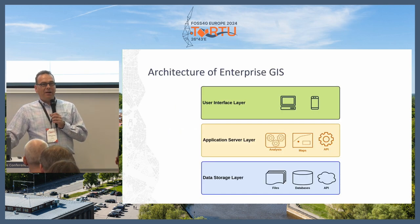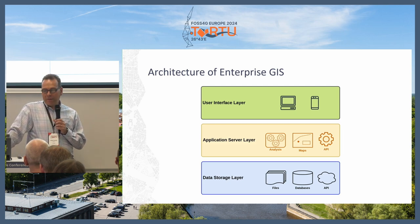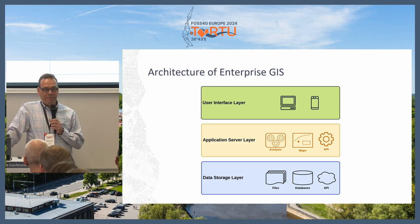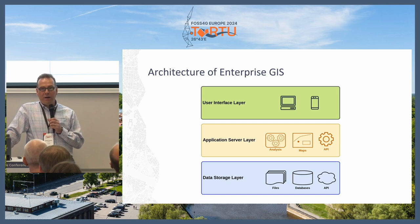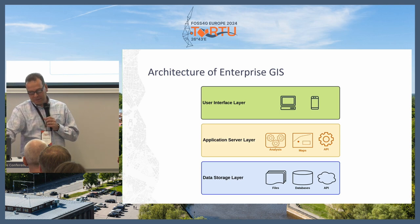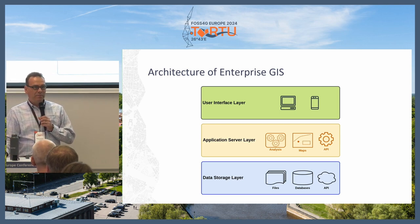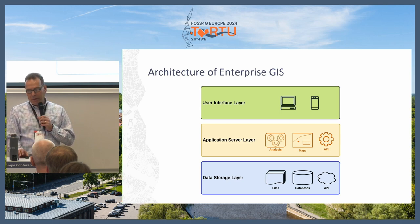The basic architecture is very simple. You have a data storage layer, then an application server layer, and then a user interface. Nothing new there. Maybe one idea is that APIs could be in several levels — not only in the application server layer, but also in the data storage layer.